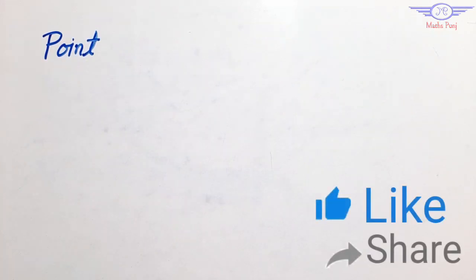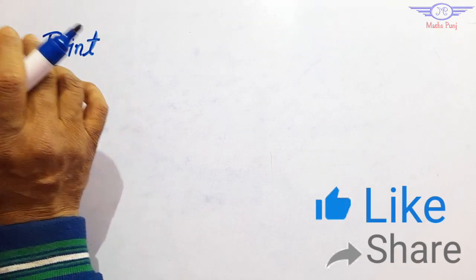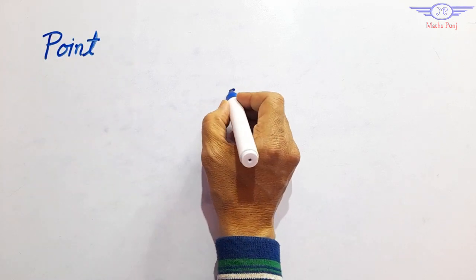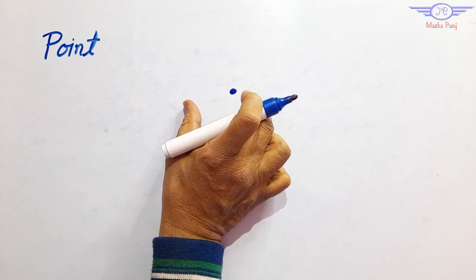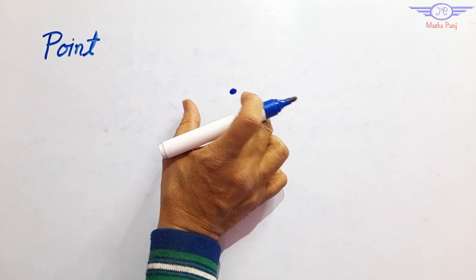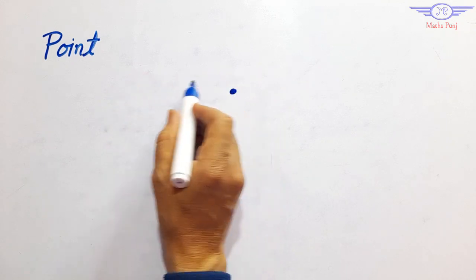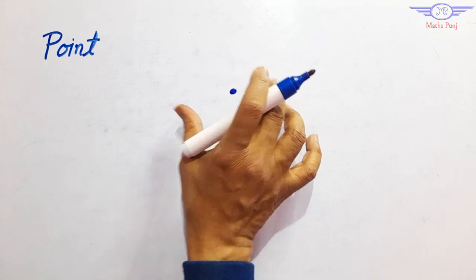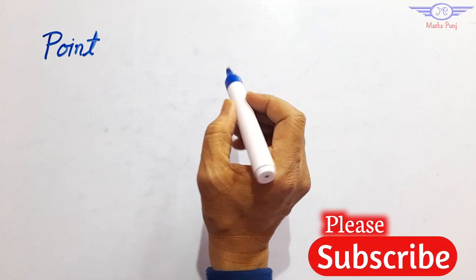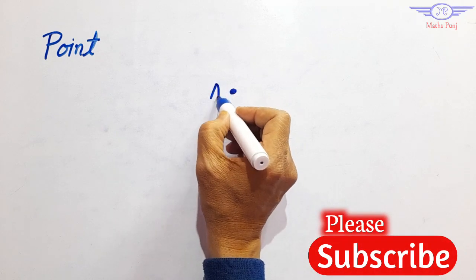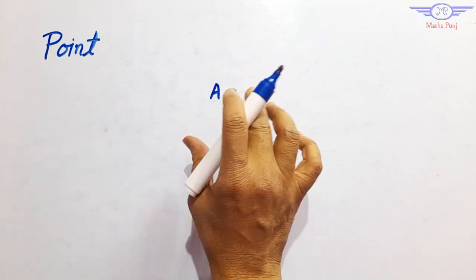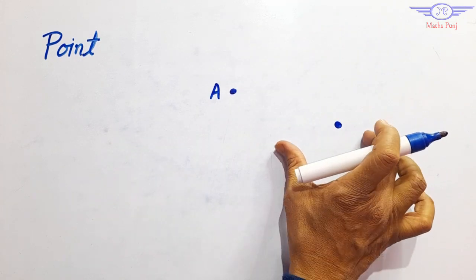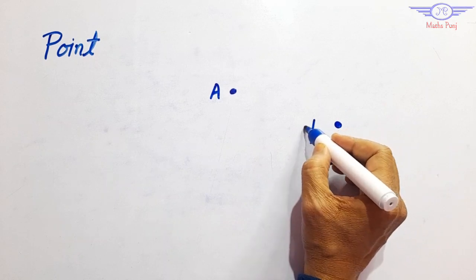Introduction to geometry. The basic concept starts from the point. What is a point? A point is a mark of position — it is used to represent a position. It has no length, no breadth, no height, and it is denoted by using any alphabet of English. You can name it like alphabet A.